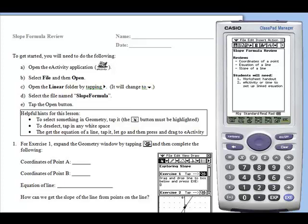This activity provides students with a quick review of the coordinates of a point, equation of a line, and slope of a line.